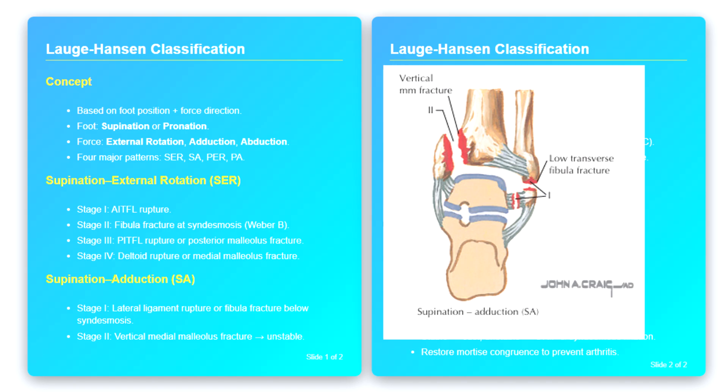In stage two, the vertical load is transferred to the medial side, producing a vertical or oblique fracture of the medial malleolus. This vertical orientation is characteristic and must be distinguished from the transverse fractures seen in external rotation injuries. Clinically, supination adduction injuries are less common, but they are important to recognize because the vertical medial malleolus fracture often extends into the plafond, making the injury more unstable and more likely to require surgical fixation.